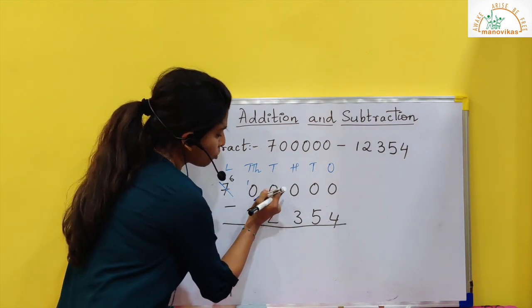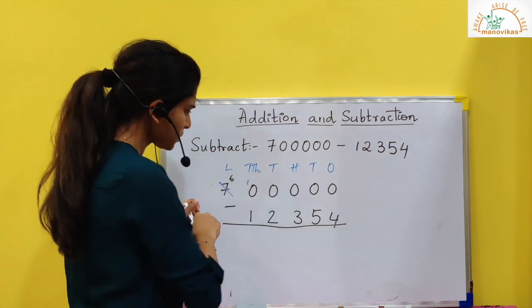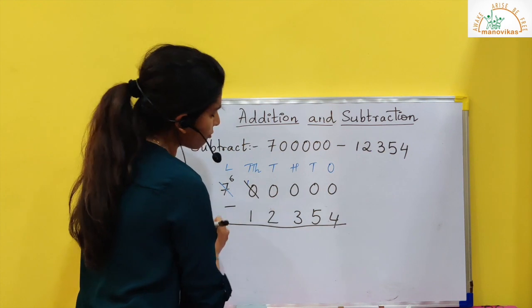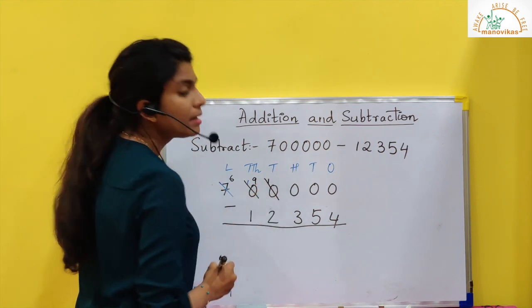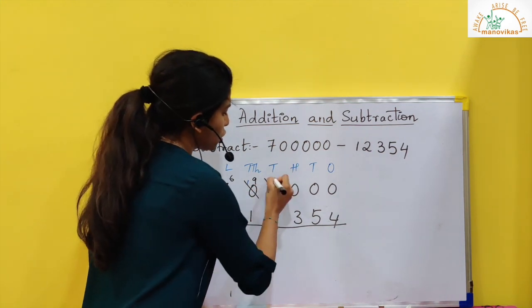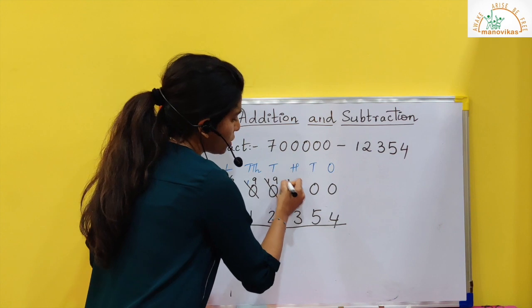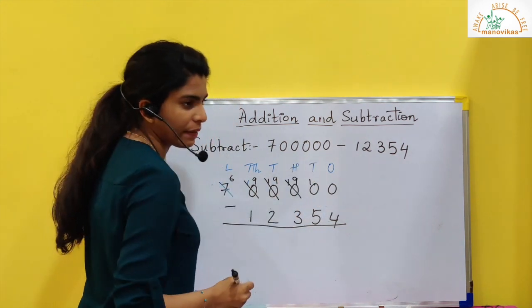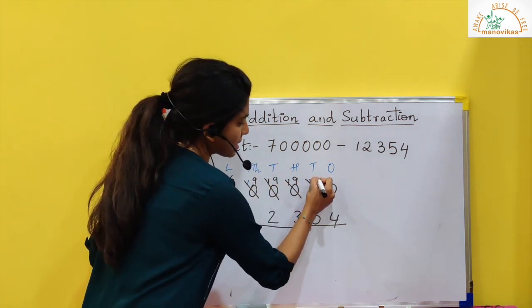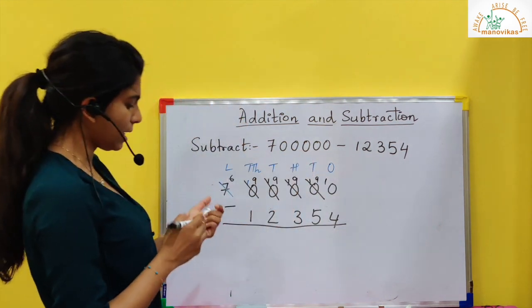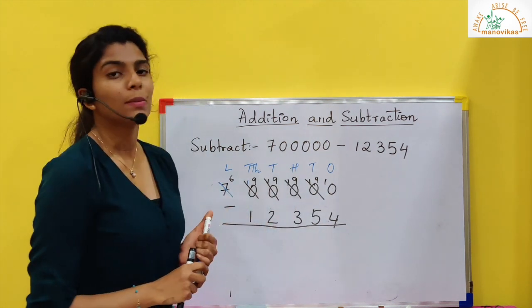Now here I want to borrow, but there are all zeros. So I want to borrow in the 1000s place. What I do? I take 1 from the 10,000s place. So this becomes 9, this becomes 10. Again, the 10s place wants to borrow 1. So here it becomes 9, this becomes 10. The 1s place wants to borrow from the 10s. So here it becomes 9. I got all the numbers on top so I can easily subtract.